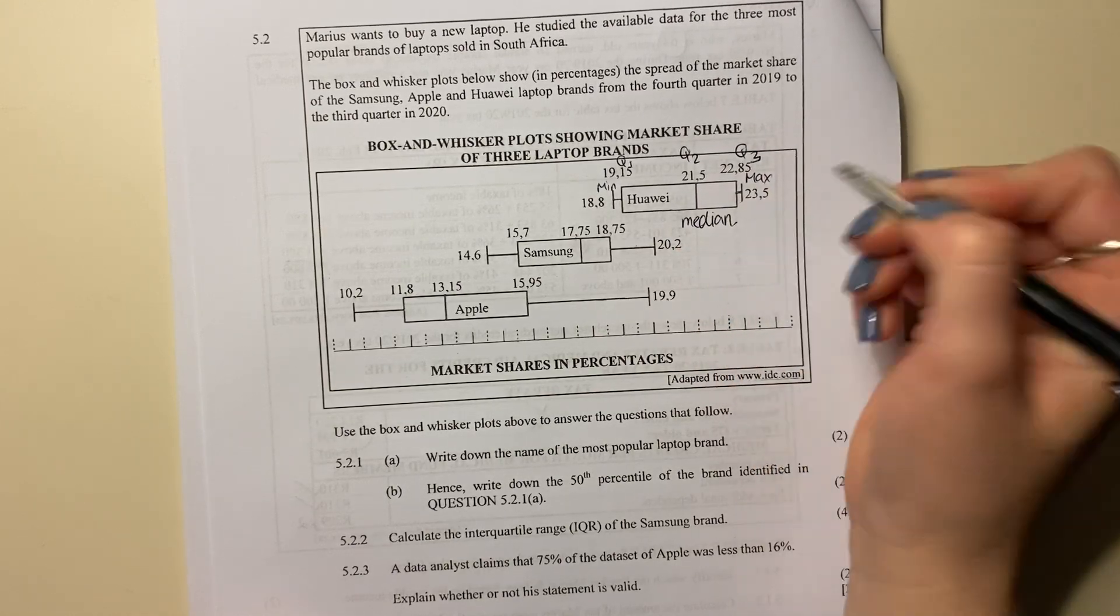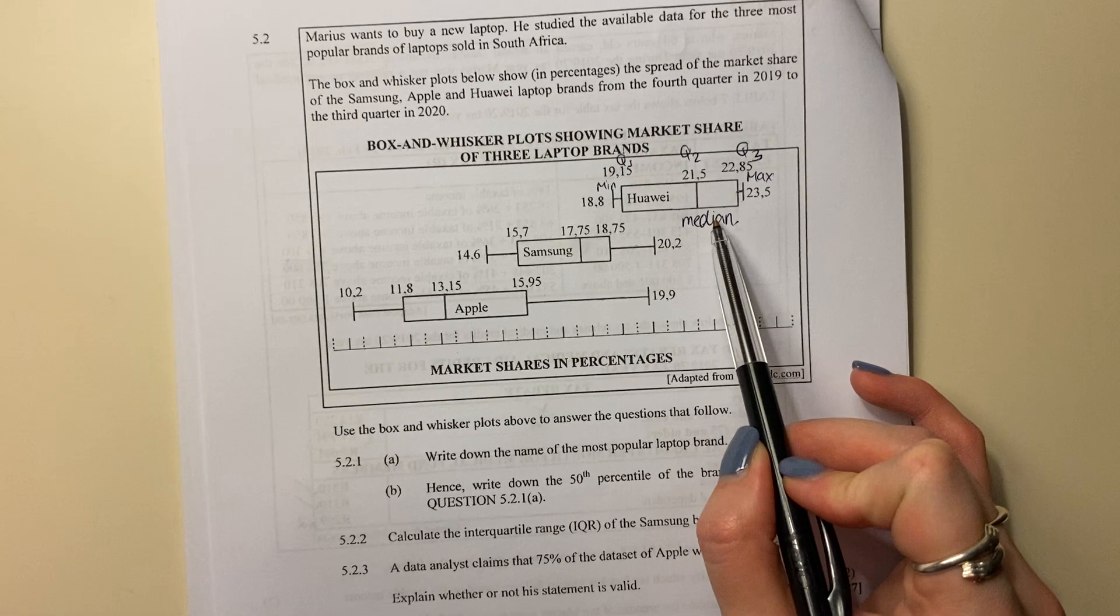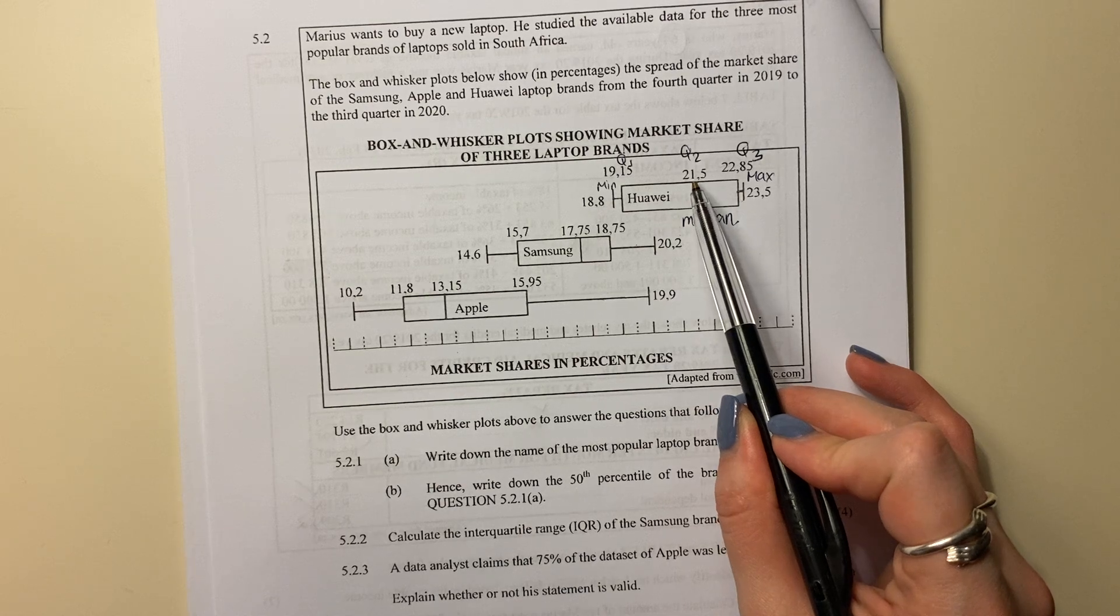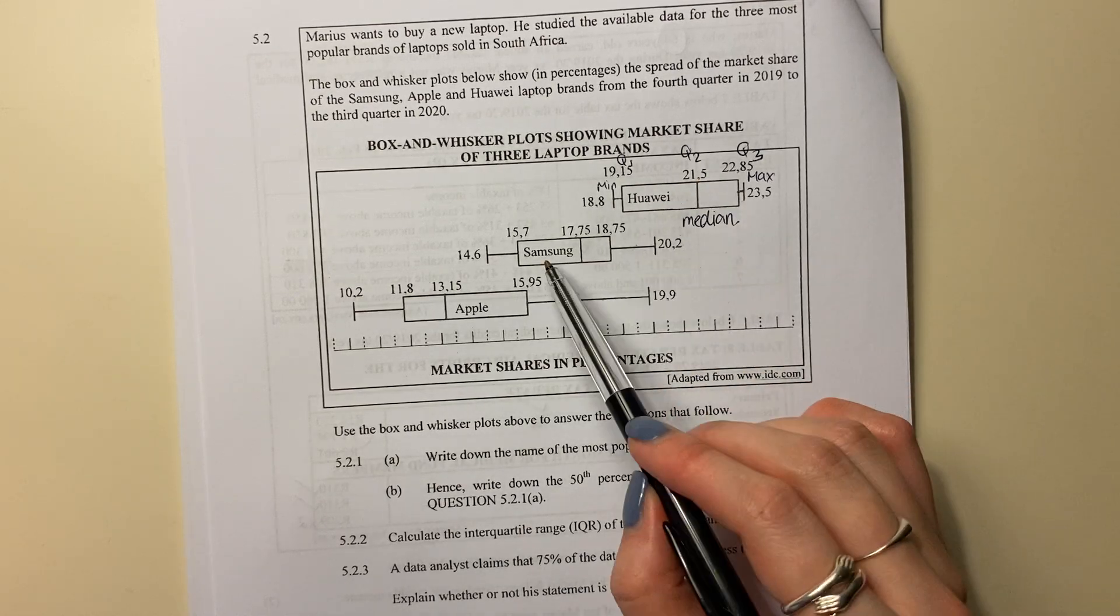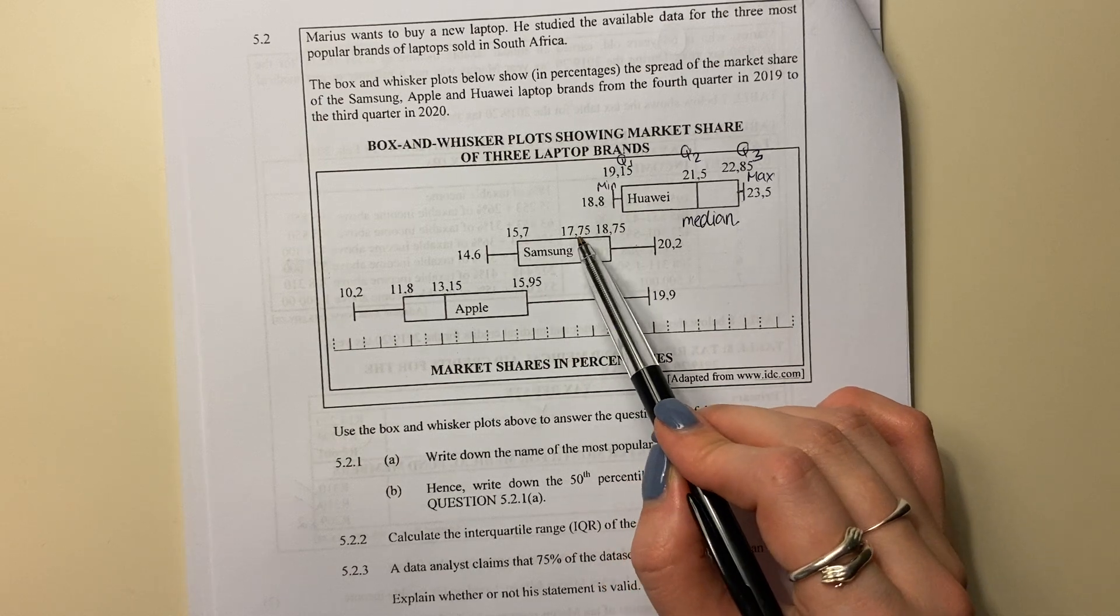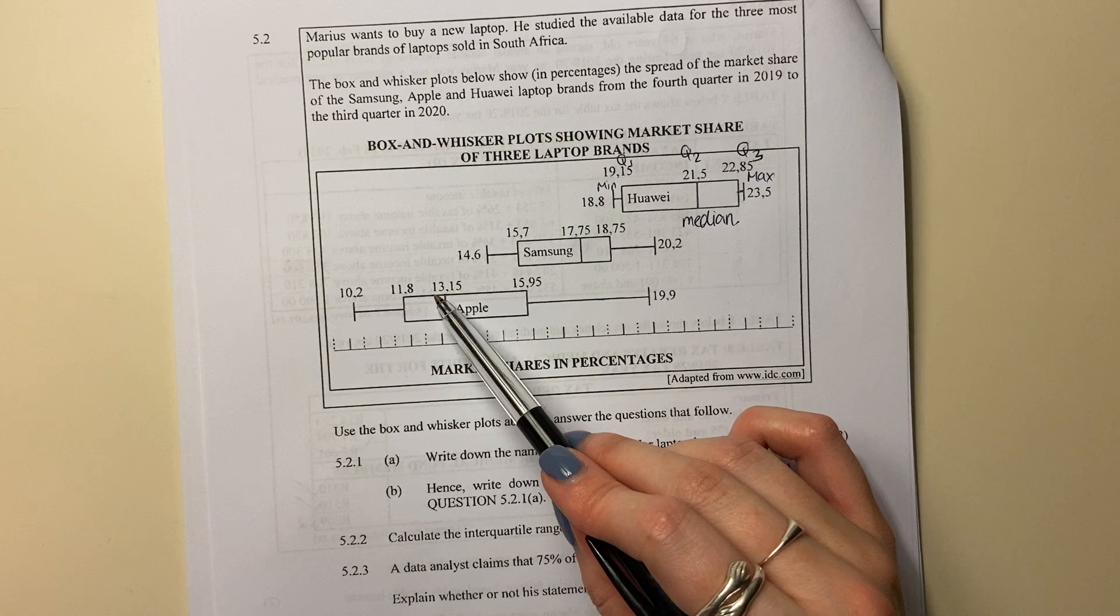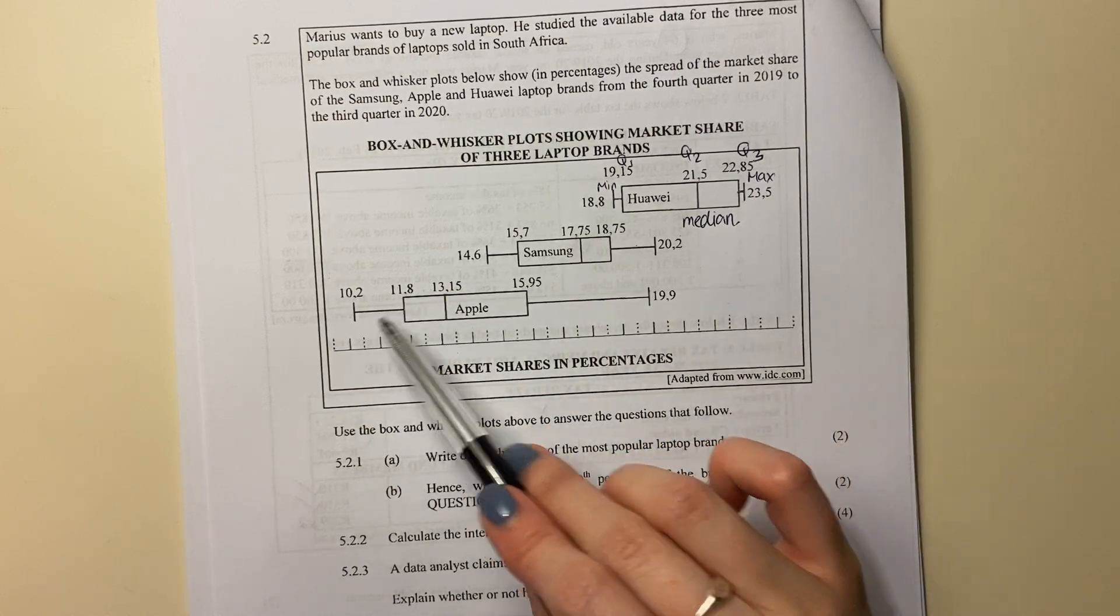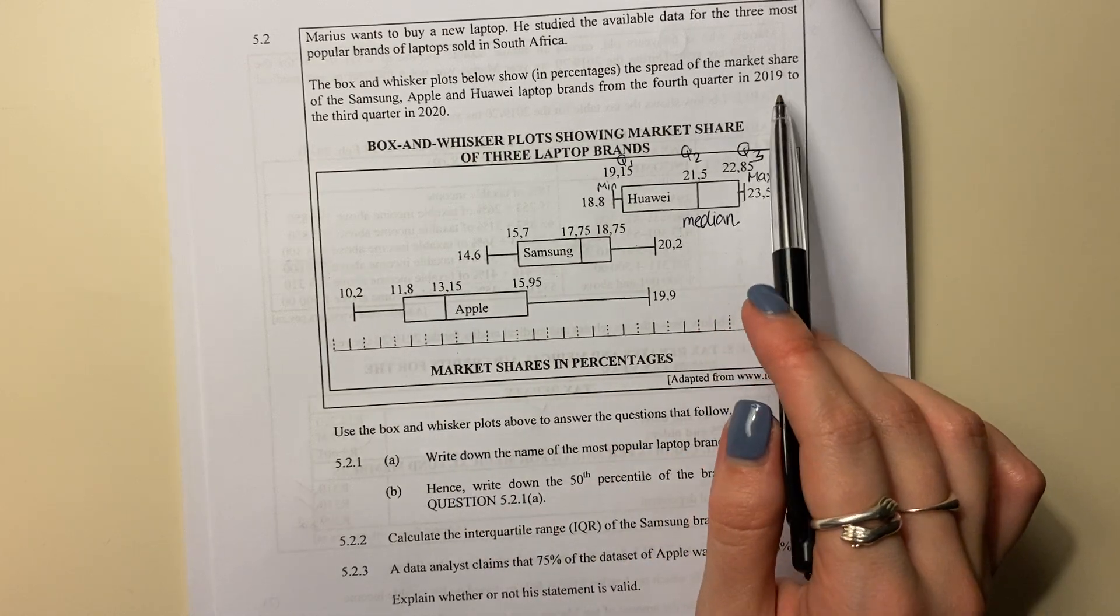Which means the middle. So here it's saying the median of Huawei, its market share is 21.5%. So that is the middle value for Huawei. The middle value for Samsung is 17.75%. The median or middle value for Apple is 13.15%.